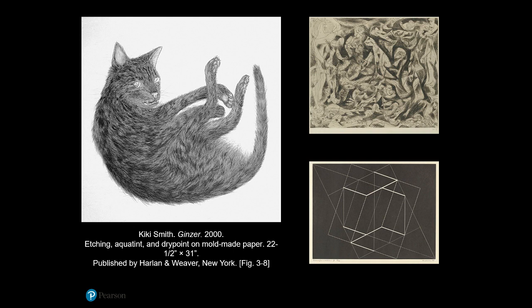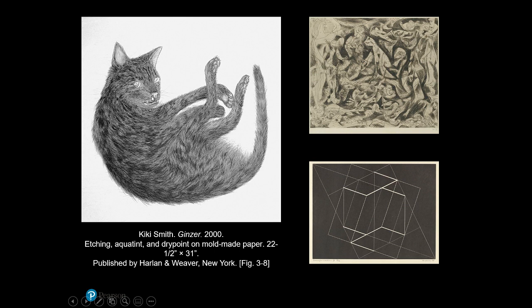Kiki Smith's Ginzer illustrates another significant use of line. It's an example of a print, a type of artwork made up almost entirely of lines that makes little use of shading or color to create depth and dimension. Instead, areas of light and dark are created by cross-hatching — drawing lines close together to create darker areas, and further apart for lighter areas. Each hair on Ginzer is made of one line. The eyes and foot pads appear slightly shaded, but everything else is done with line.